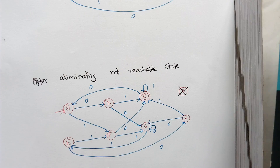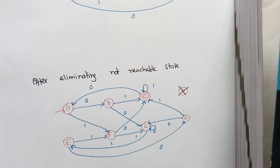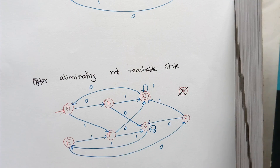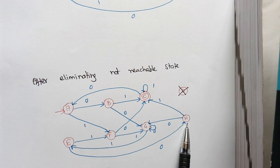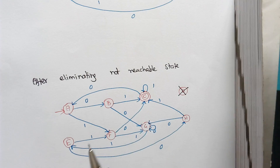To repeat the definition: we say two states are equivalent if for all possible input, one state goes to a final state and the other also goes to a final state. The definition for two states being distinguishable is: on any one possible input, if one state goes to a final state and the other remains in a non-final state, we say they are distinguishable. For example, consider states E and F. When input is 0, F goes to C and E goes to H, where C is a final state and H is a non-final state. So E and F are distinguishable.